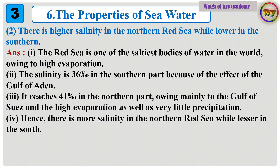Question 2: There is higher salinity in the northern Red Sea while lower in the southern. Answer: The Red Sea is one of the saltiest bodies of water in the world, owing to high evaporation. The salinity is 36% in the southern part because of the effect of the Gulf of Aden. It reaches 41% in the northern part, owing mainly to the Gulf of Suez and the high evaporation as well as very little precipitation. Hence, there is more salinity in the northern Red Sea while lesser in the south.